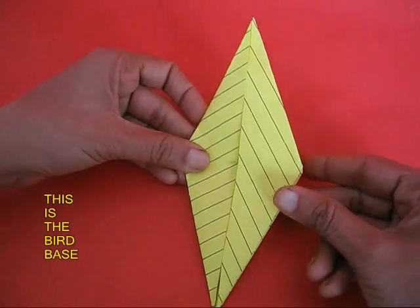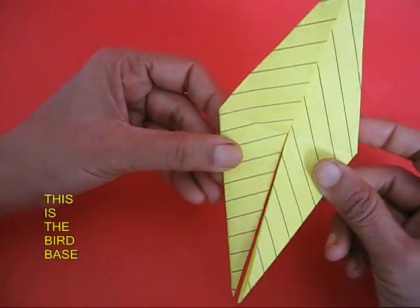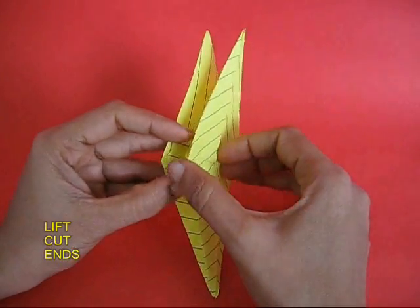Now this is called in origami as a bird base. It has got two ends which can move.